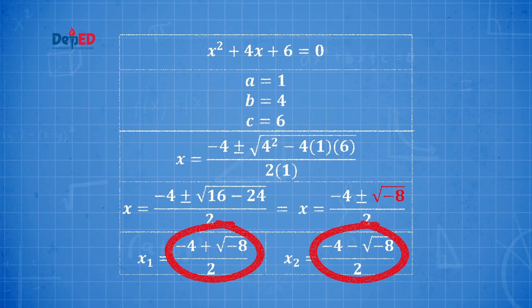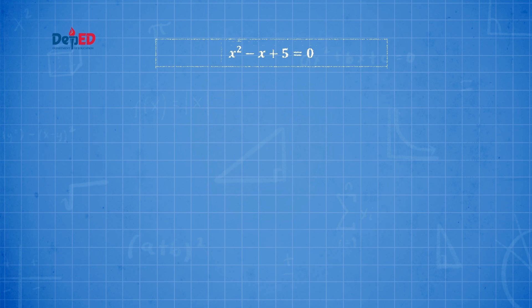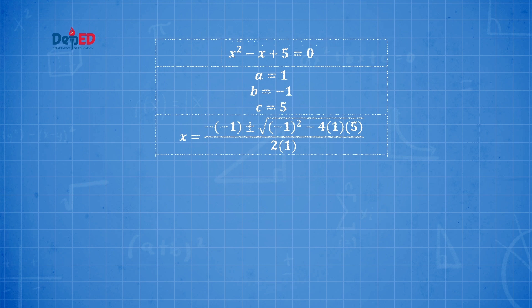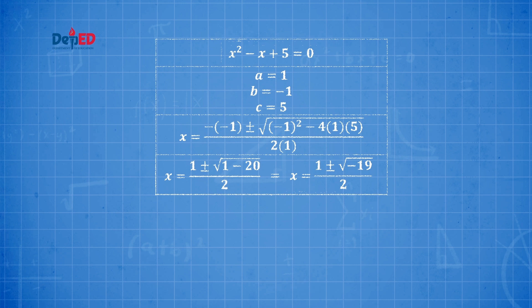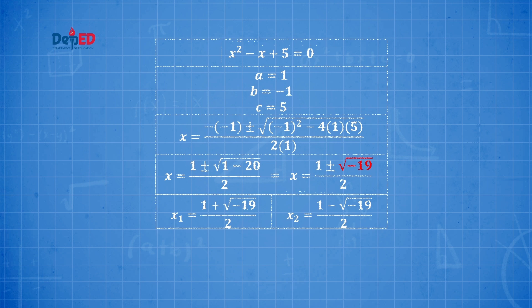We split the equation and solve for x. Since we can't combine real and imaginary numbers, we take (−4 + √(−8))/2 and (−4 − √(−8))/2 as the roots. Next, we solve x² − x + 5 = 0. There exists no number that when multiplied by itself yields a negative result, so √(−19) stays as it is — it is an imaginary number, not a real number. The roots are (1 + √(−19))/2 and (1 − √(−19))/2.